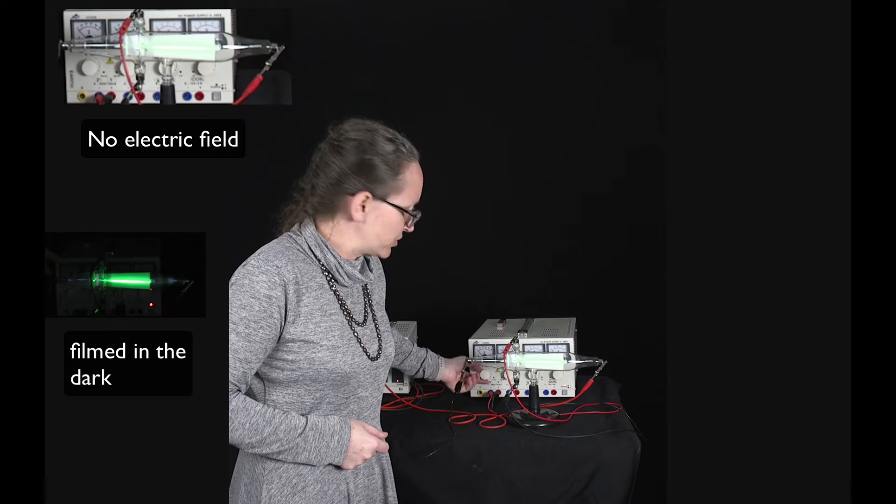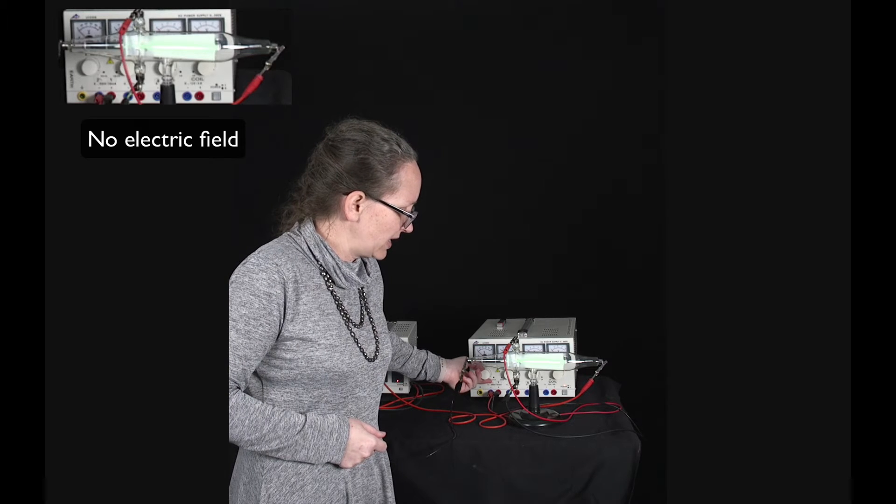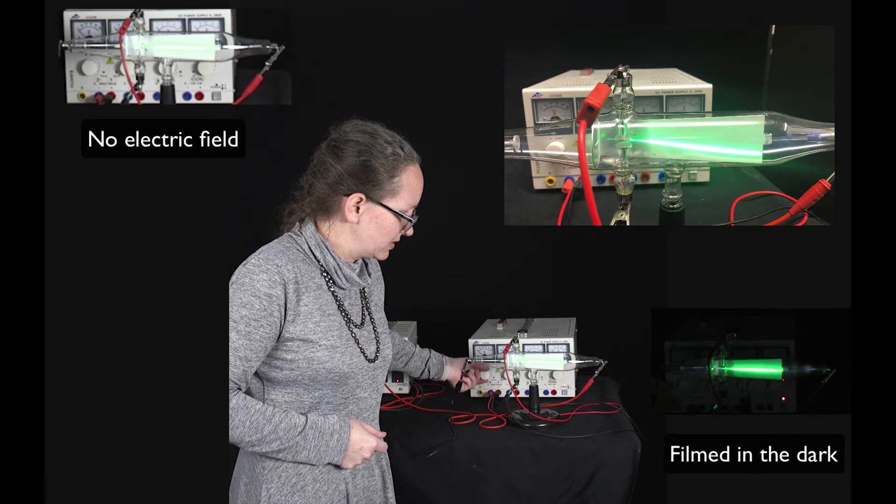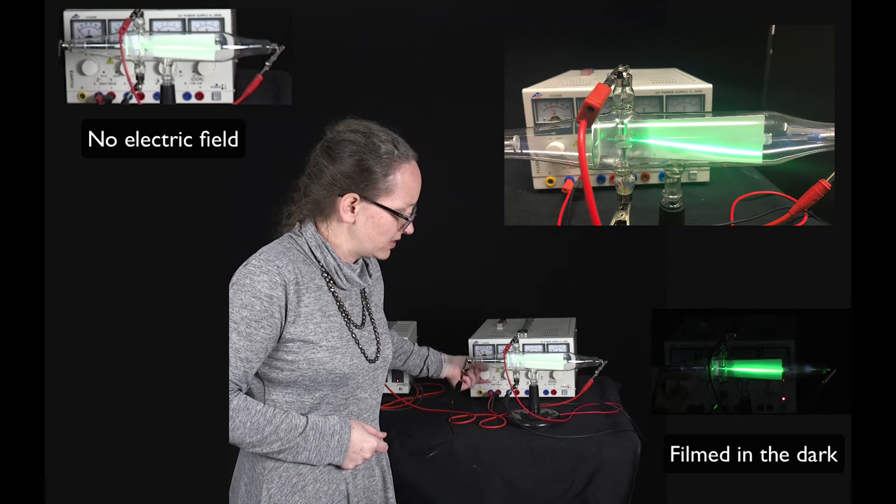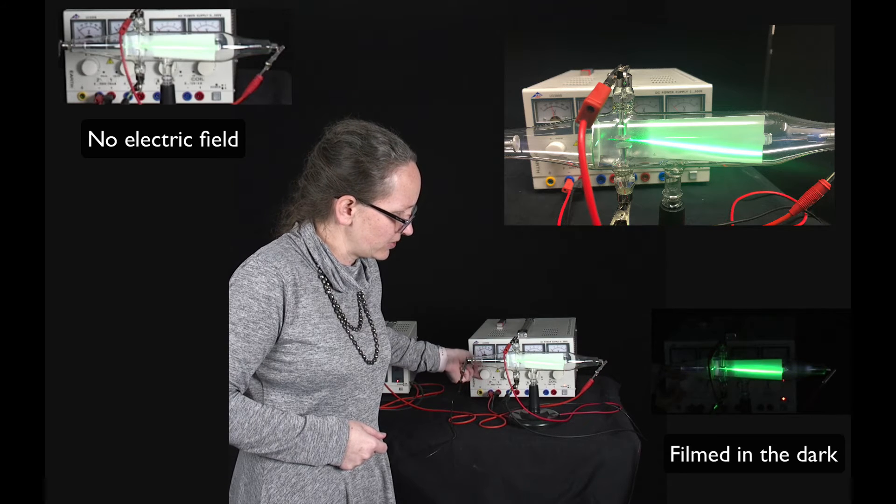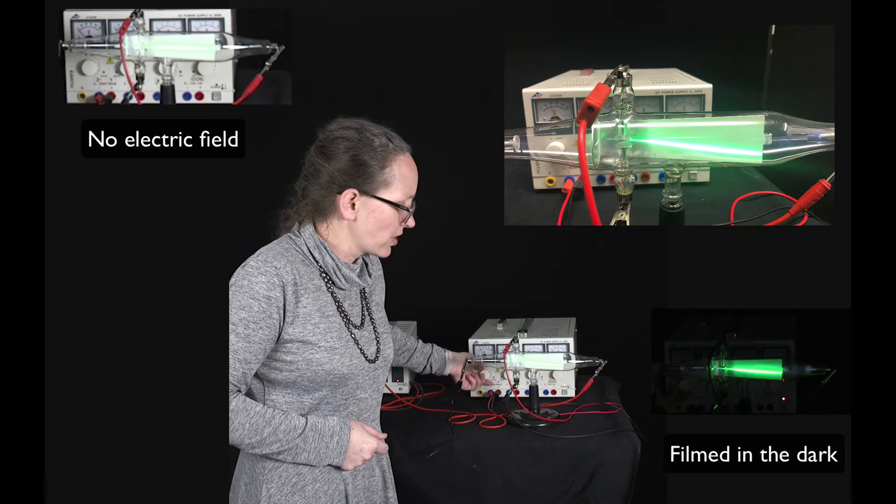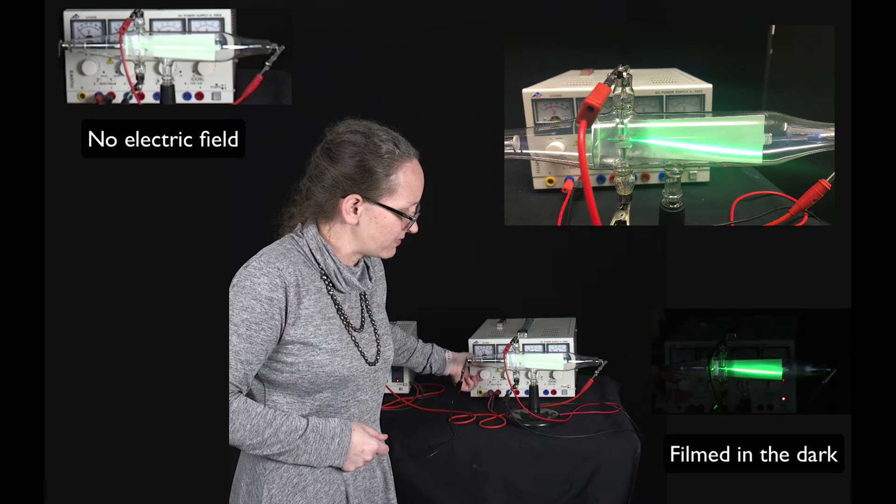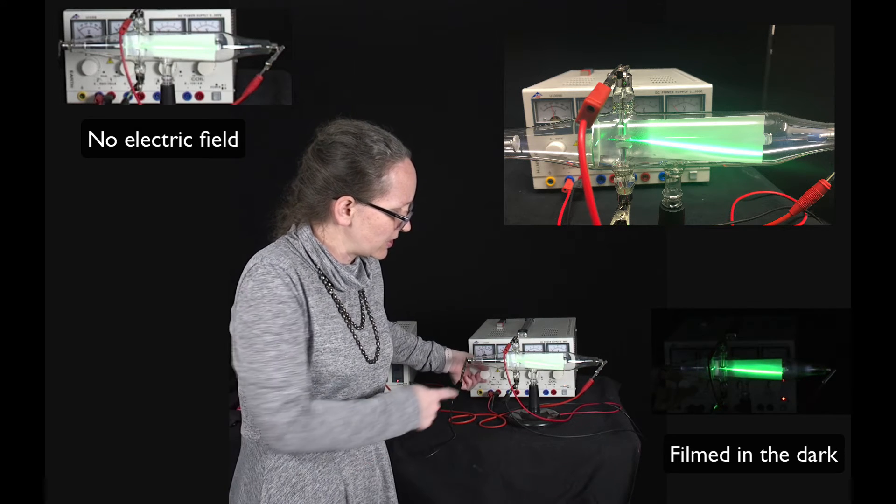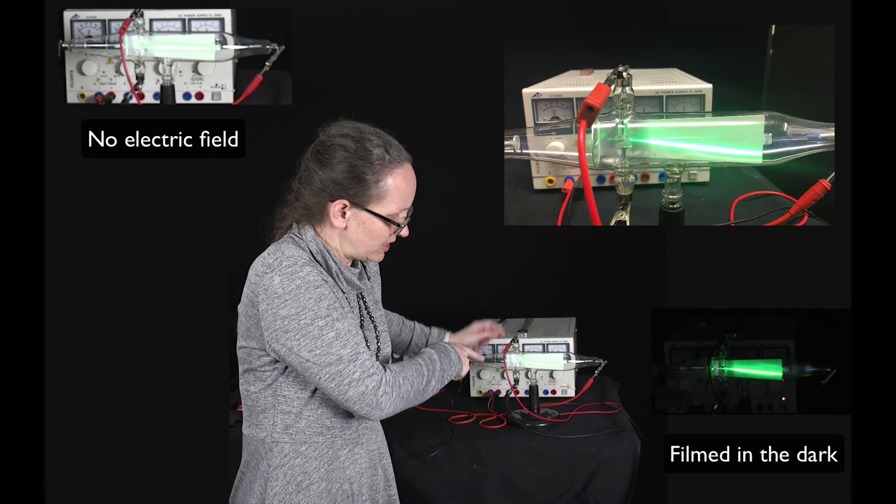So now I can adjust the voltage with this knob here. And you can see as I increase the voltage the cathode rays are deflected and that's because they feel the force between these two plates here.